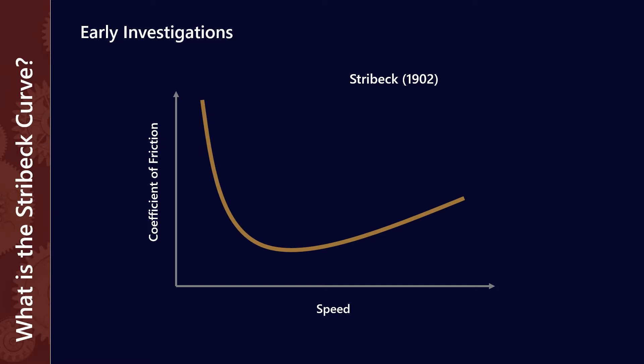Stribeck took it one step further to look at the coefficient of friction versus speed — so rather than just friction, which takes into account the normal force, he did the assessment based on the coefficient of friction. Then two others, Gumbel and Hersey, working independently in 1914, looked at the relationship between the coefficient of friction and a term called ZN on P.